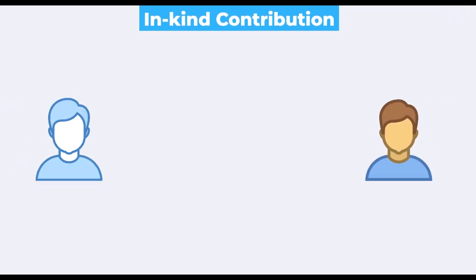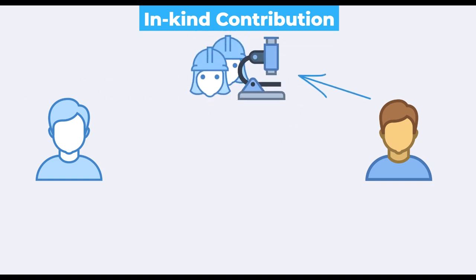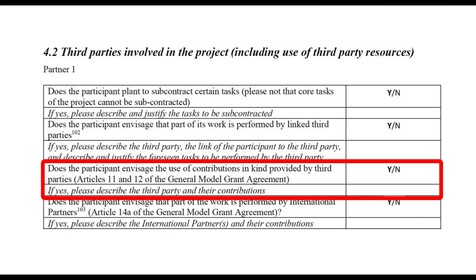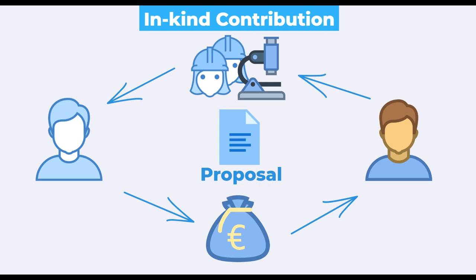Beneficiaries may also use the so-called in-kind contributions from third parties, either for free or against payment. Most often, this is the case when a third party lends the beneficiary some of its equipment or even seconds its personnel to the beneficiary. If the contribution is against payment, the third party issues an invoice, which cannot include the third party's profits. In-kind contributions must also be foreseen in project proposals and listed in Annex 1 of the grant agreement. Third parties providing in-kind contributions do not work on project tasks and do not have their own cost category.